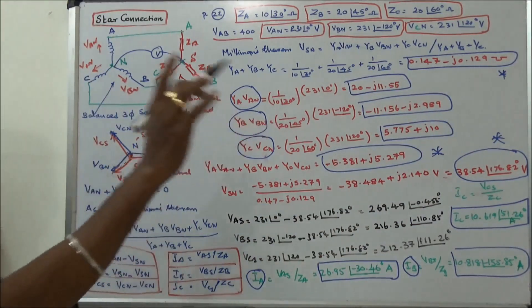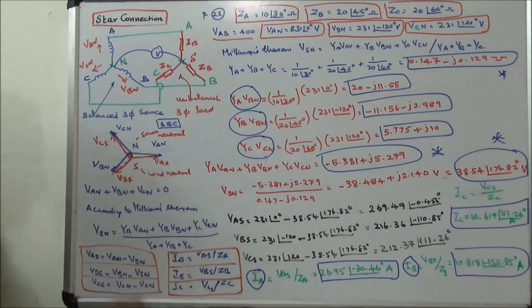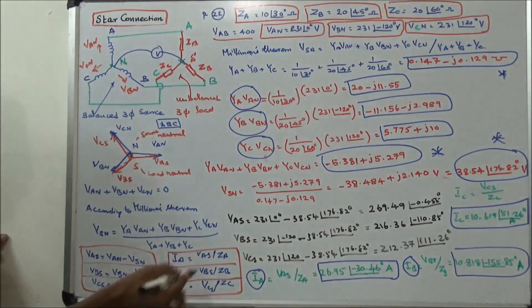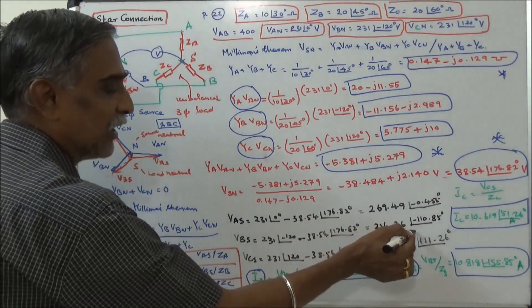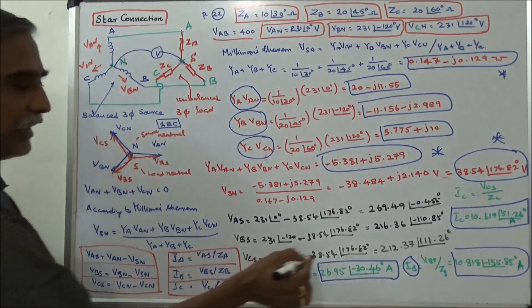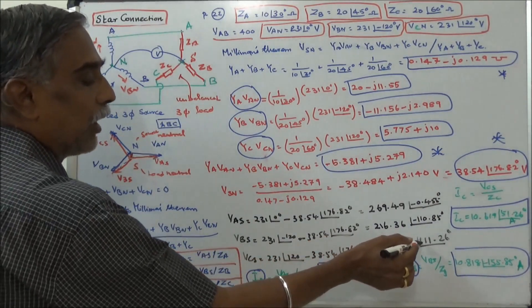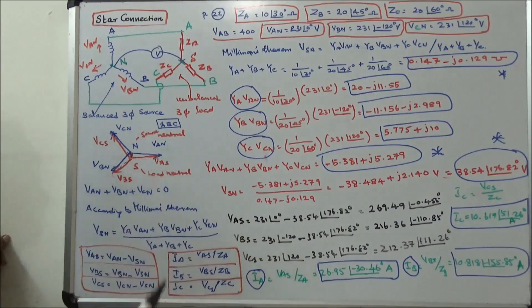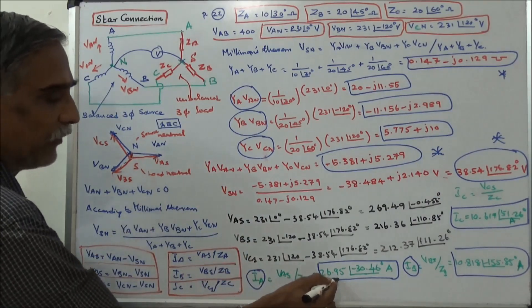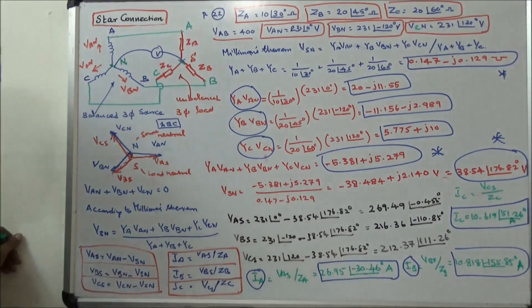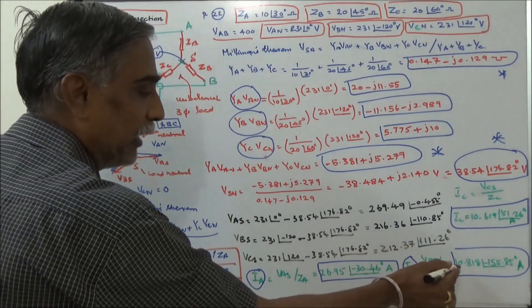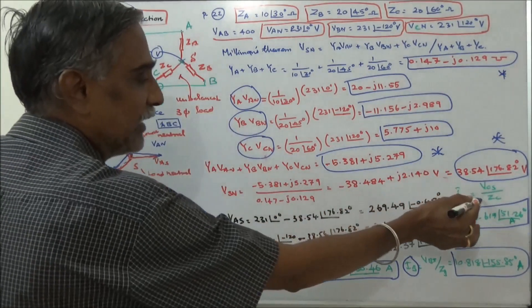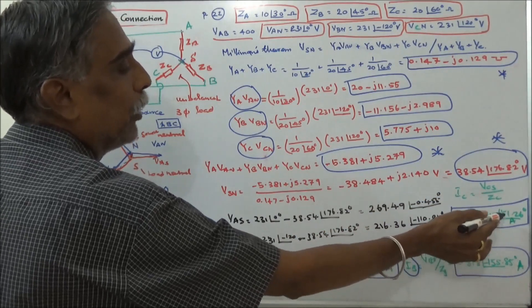Once VSN is calculated, we find the load voltages: VAS equals 269.49 angle minus 0.455 degrees, VBS equals 216.36 angle minus 10.85 degrees, and VCS equals 212.37 angle 111.26 degrees. The line currents are then: IA equals VAS by ZA equals 26.95 angle minus 30.46 degrees amperes, IB equals VBS by ZB equals 10.818 angle minus 155.85 degrees amperes, and IC equals VCS by ZC equals 10.619 angle 51.26 degrees amperes.